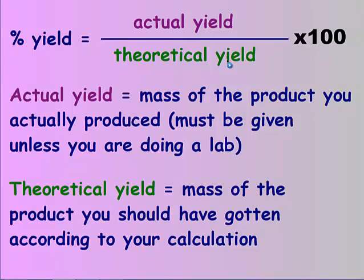When I go to make a box of cookies it says I should make 24. If I make 20 or 36, then that's going to be my actual yield, but theoretically according to the box I should have only made 24. And because it's a percent, I'm going to multiply by 100.